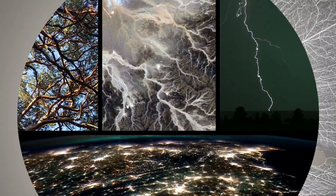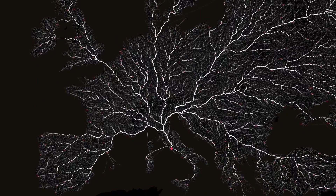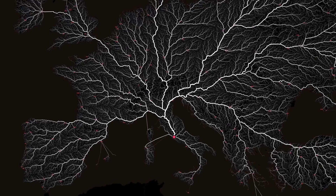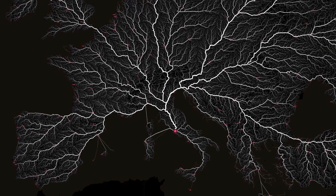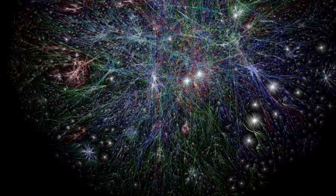But also man-made structures organize themselves into fractal patterns, without us actually planning them this way. Here is a map of all the roads leading to Rome, and a map of the internet.